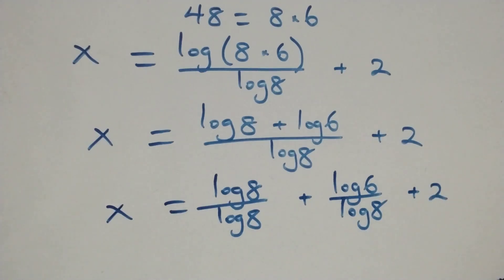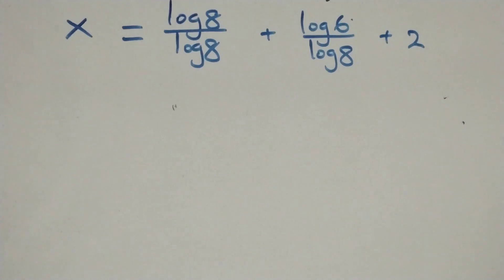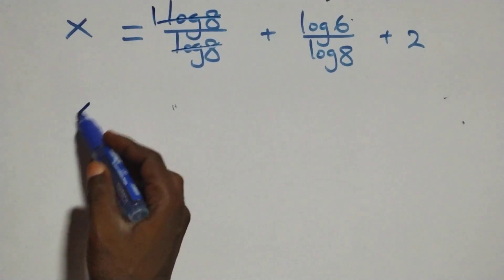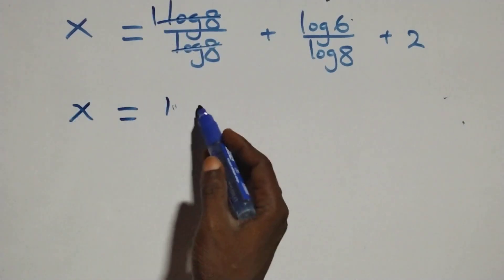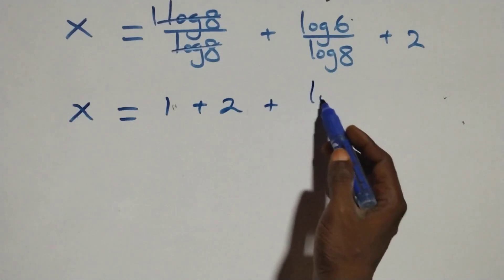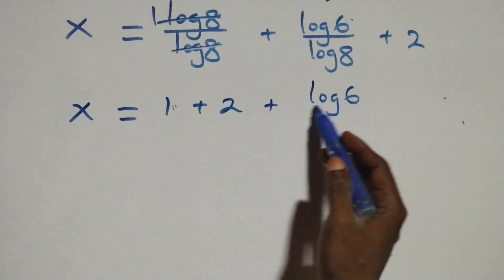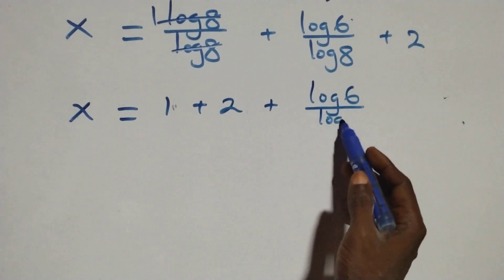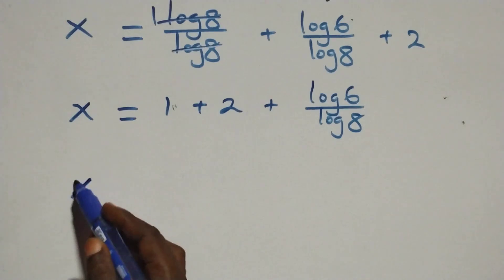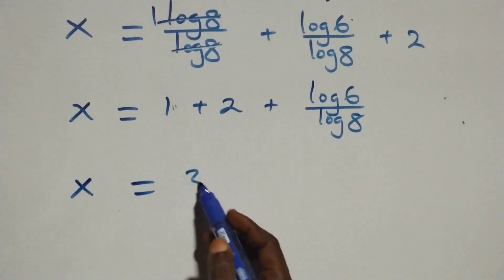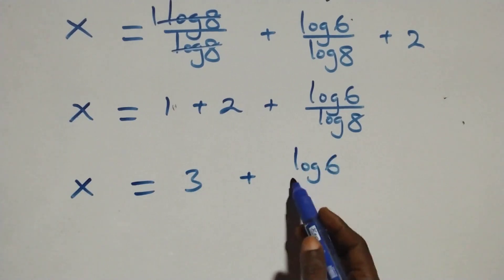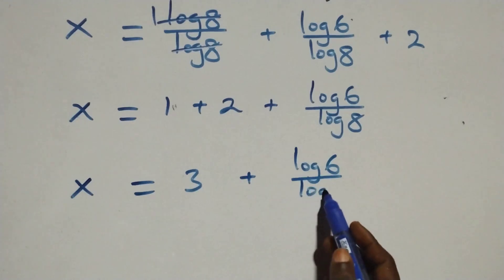The log 8 terms cancel each other, leaving 1. So we have x equals 1 plus log 6 over log 8 plus 2, which gives x equals 1 plus 2 plus log 6 over log 8, and 1 plus 2 equals 3, so x equals 3 plus log 6 over log 8.